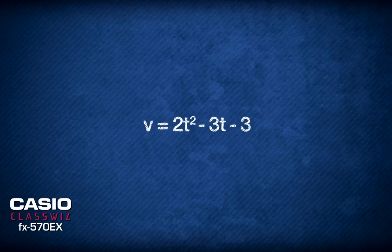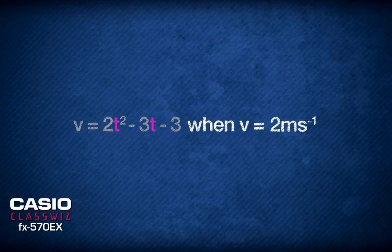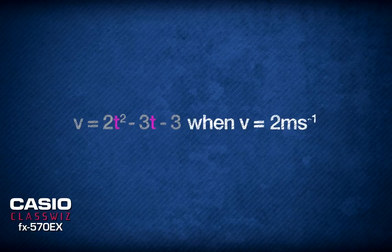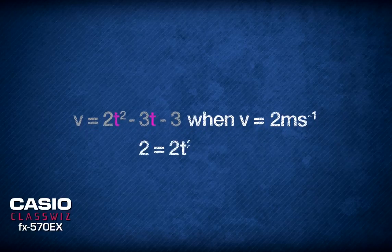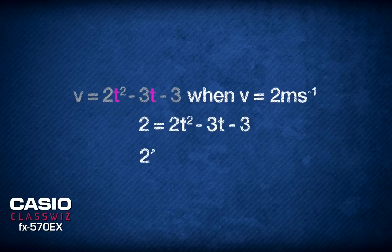First of all, we have to figure out the value of t when the object's velocity is 2 meters per second. So, substituting v equals to 2, we have 2 equals 2t squared minus 3t minus 3, which then becomes 2t squared minus 3t minus 5 equals 0.